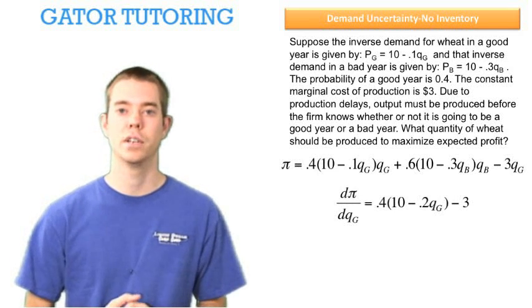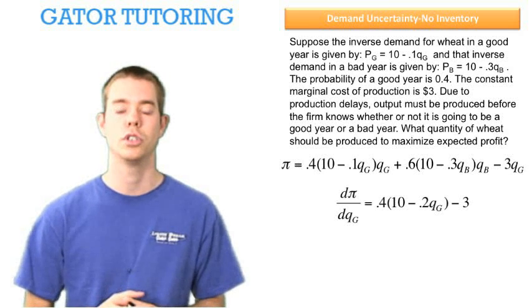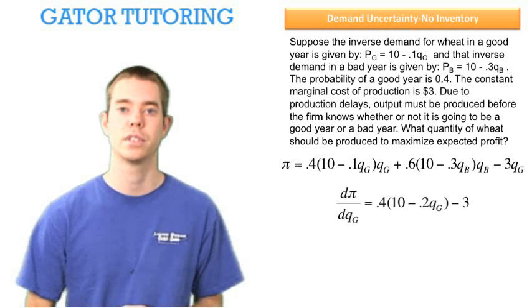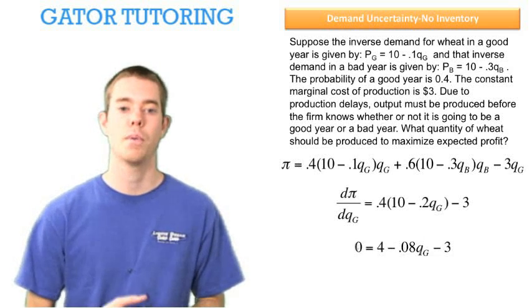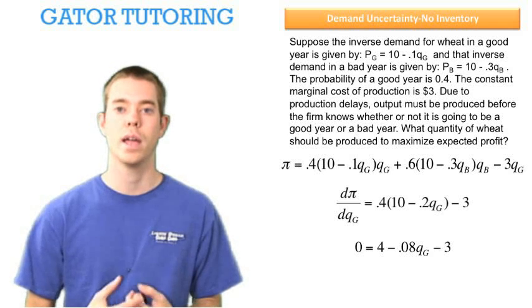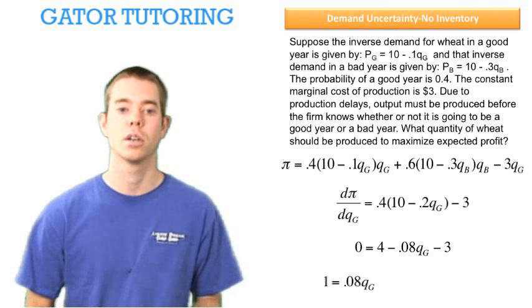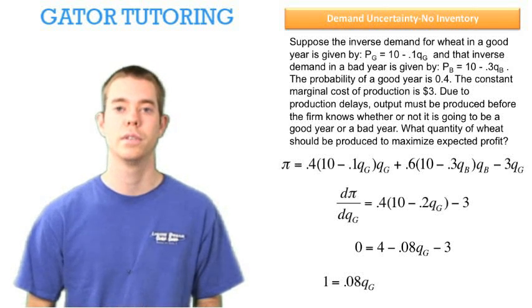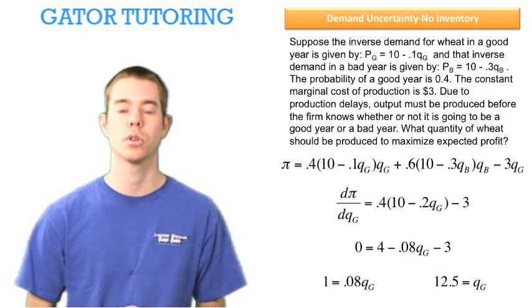We're going to take this derivative with respect to QG, and we're going to take it with respect to QB, but first let's do QG. We leave the 40% outside the parentheses for the derivative's sake at first, just to make life a little easier. Now we can distribute it through because we're going to have to. We get 4 minus 0.08QG minus 3 is all equal to zero. We can combine like terms, moving the 0.08 to the other side and making it positive. And dividing through by 0.08, we get QG is equal to 12.5.